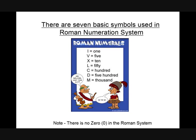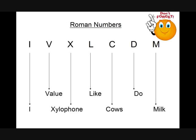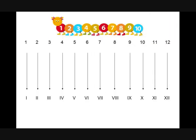Remember that there is no zero in the Roman system. To help you remember the Roman numbers: I Value Xylophones Like Cows Do Milk. These are Roman numbers from one to twelve. Various numerals are formed by writing the Roman symbols in different combinations with the help of certain rules. Let's learn the rules one by one.